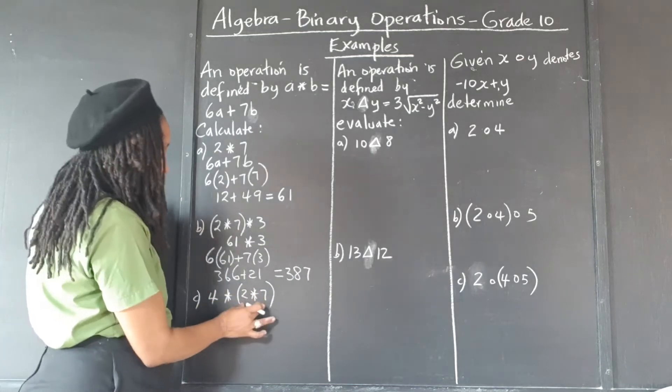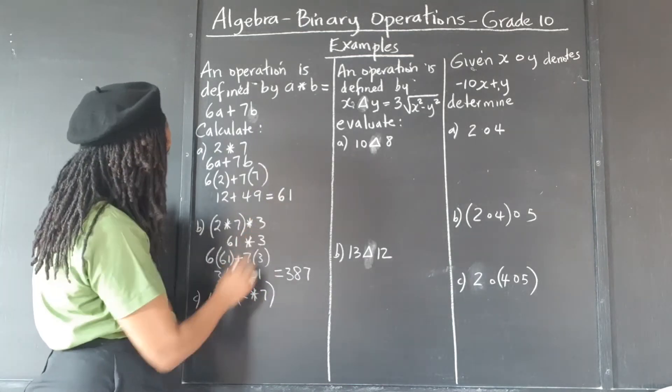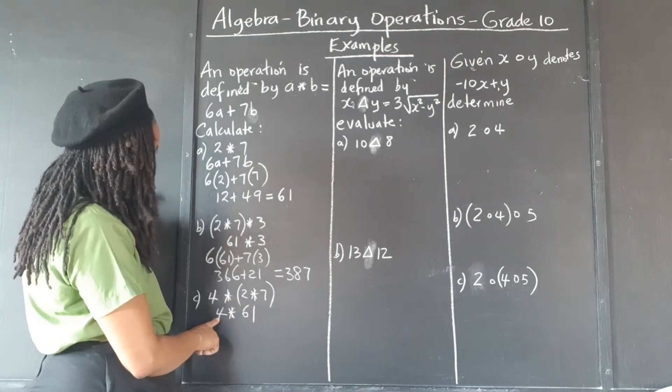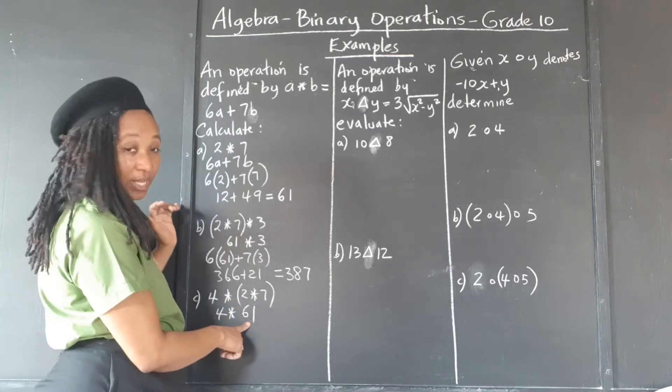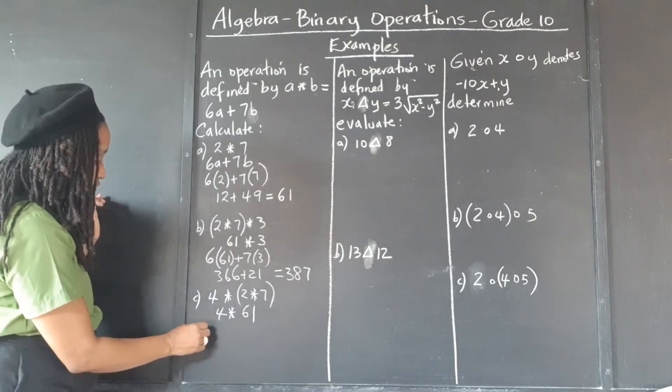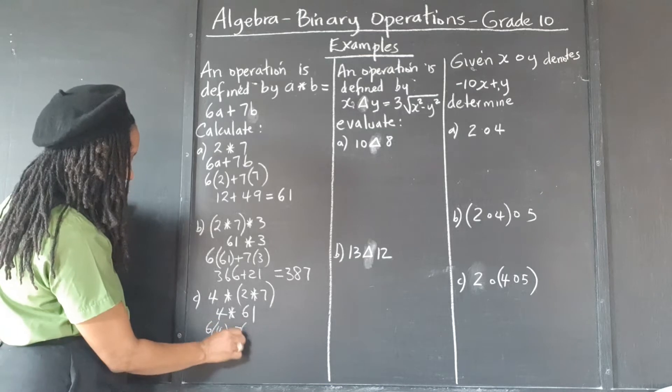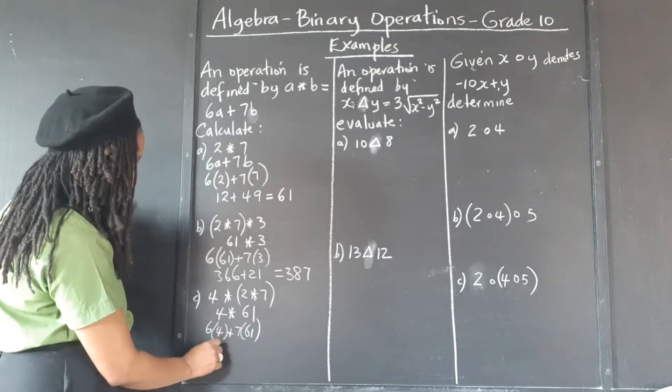So again, we have 2 asterisk 7, we can just substitute the 61. So now where a is, we're going to put 4, and where b is, we're going to put 61. So it's 6 times 4 plus 7 times 61,